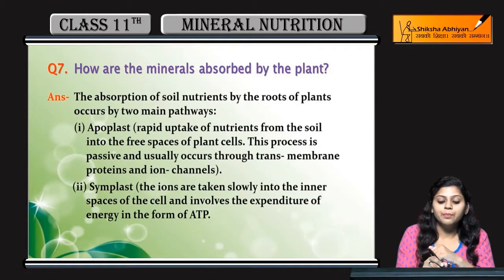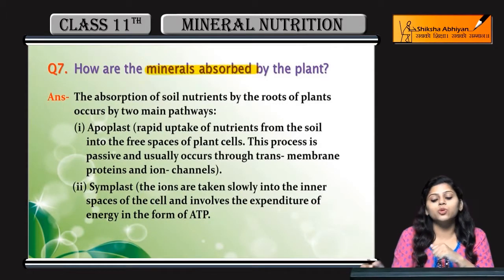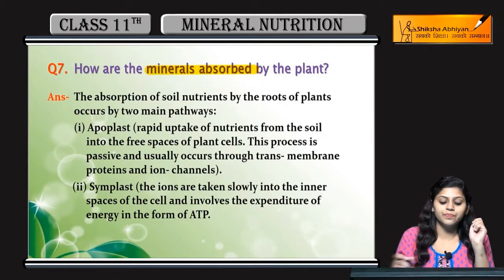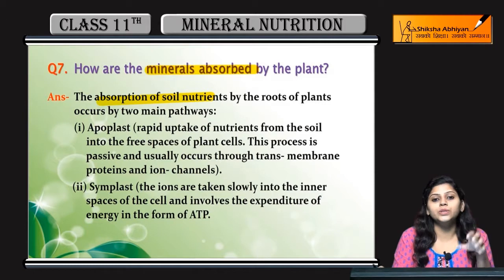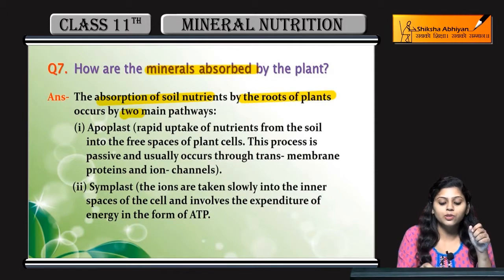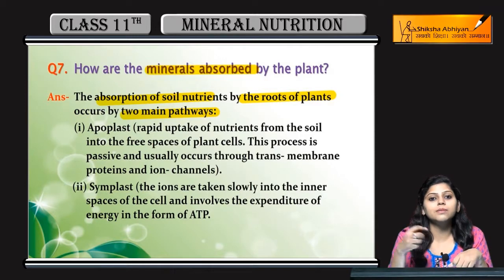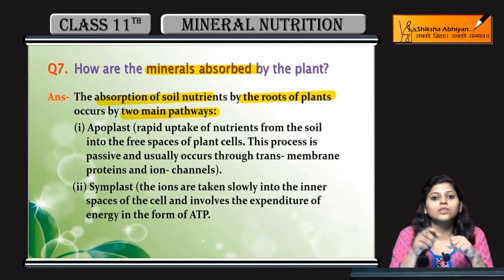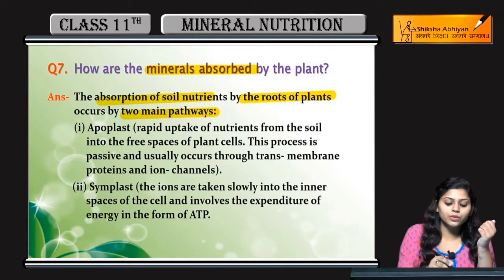How are minerals absorbed by the plant? Minerals absorb kaise hote hain plants mein? Absorption of soil nutrients by the roots of the plant occurs by two main pathways. Kahan se absorb kerti hai nutrient kooi bhi plant? Roots se. Roots kahan se kerti hai? Soil se absorb kerti hai. Do ways mein hoota hai.